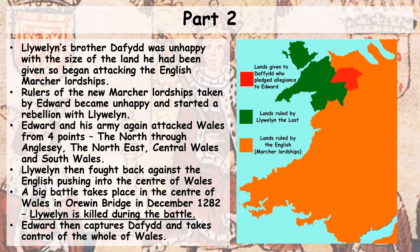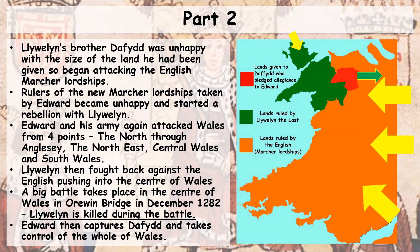In the second part of this war between Llewellyn and Edward, Llewellyn's brother Davyf was unhappy with the land he had been given by the English — he felt he deserved bigger land, so he began attacking the marcher lordships just outside his area. The rulers of the new marcher lordships that Edward had taken from Llewellyn also became unhappy and started a rebellion with Llewellyn. Edward's army again attacked Wales from four different points: through the north, through Anglesey, the northeast, central Wales, and again through south Wales.